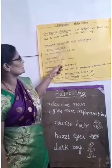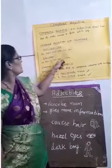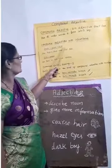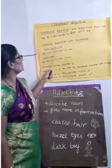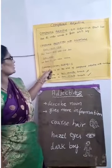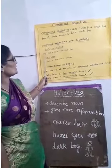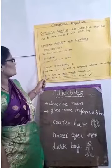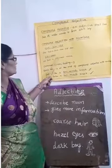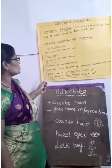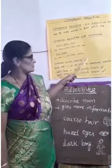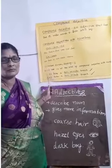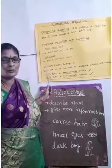One example of compound adjectives with numbers is 'four year old' — four is a number. For example: 'She has a four-year-old son.' Next example: 'six week' — 'We took a six-week course.'